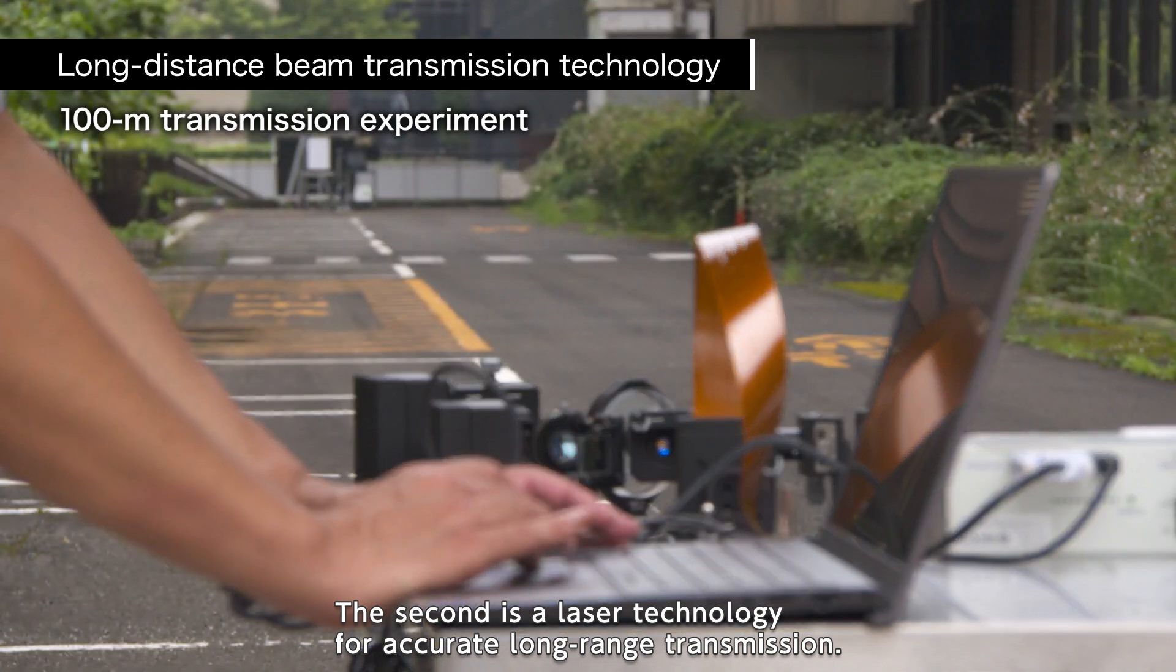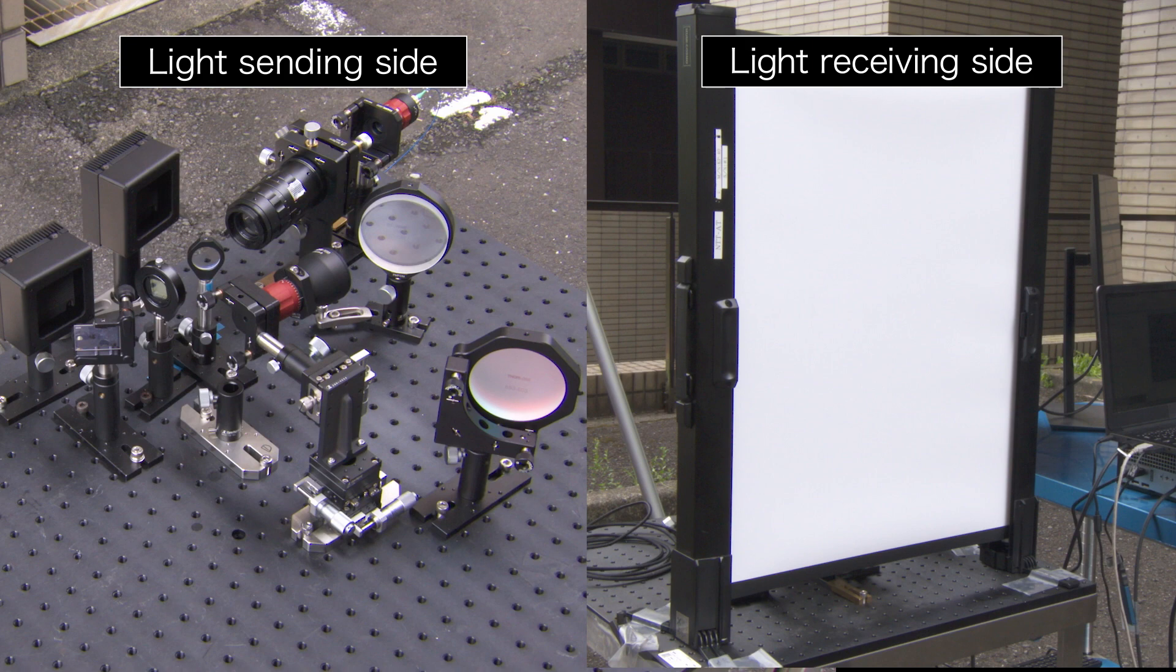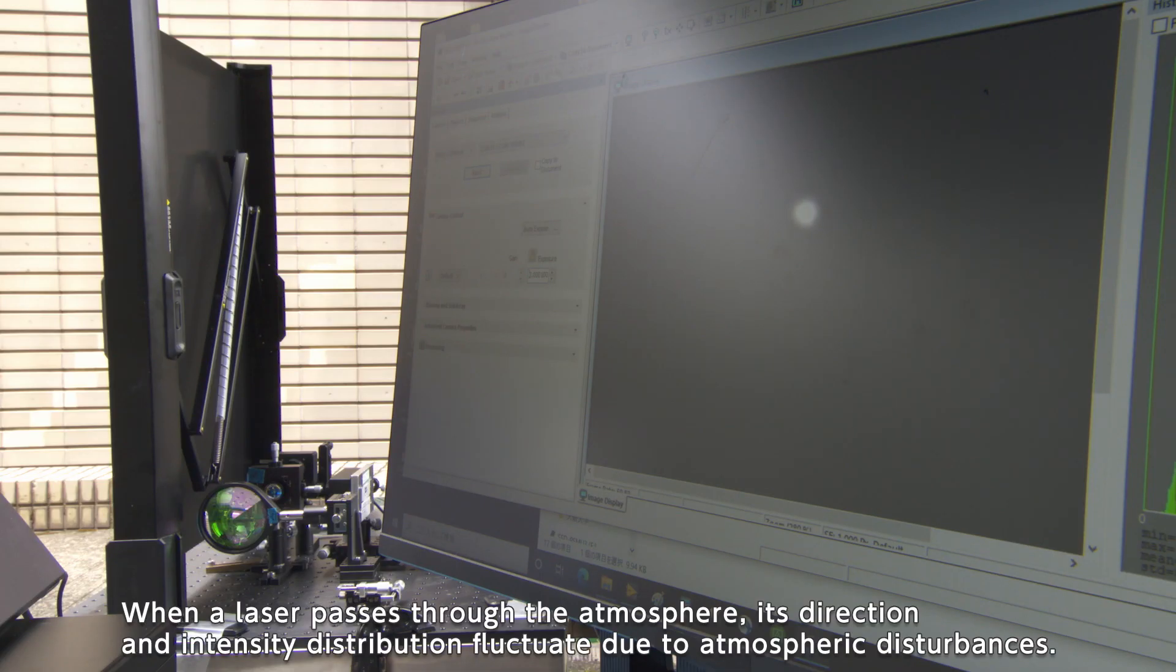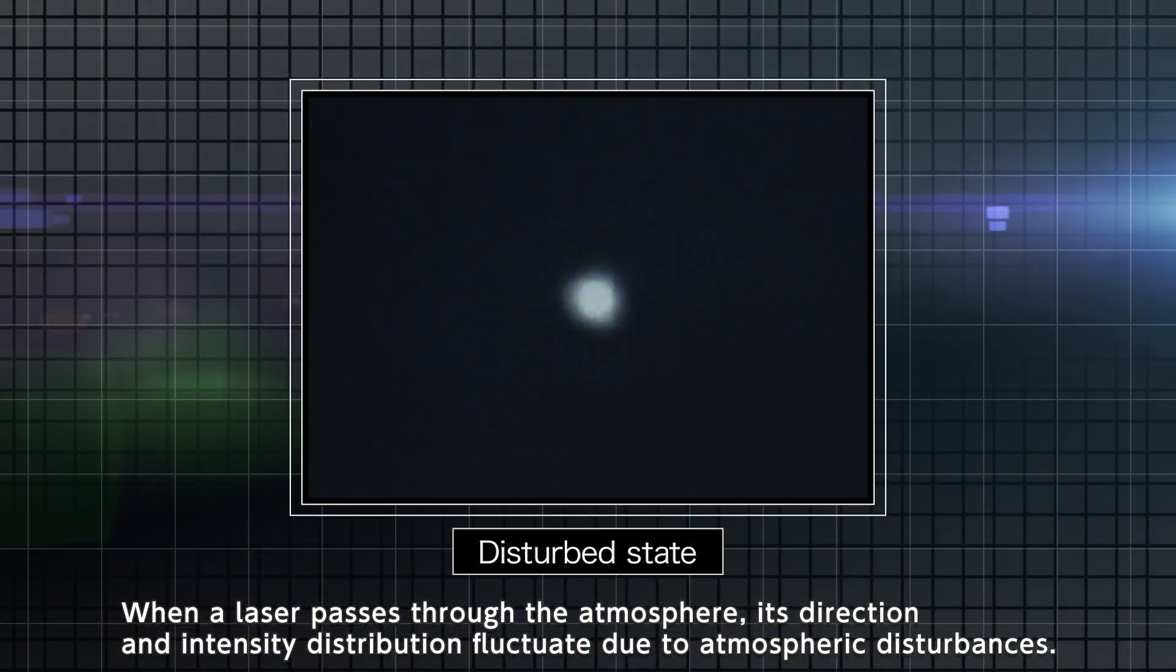The second is a laser technology for accurate long-range transmission. When a laser passes through the atmosphere, its direction and intensity distribution fluctuate due to atmospheric disturbances.